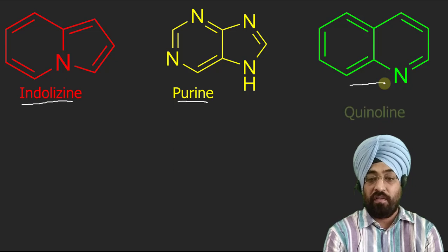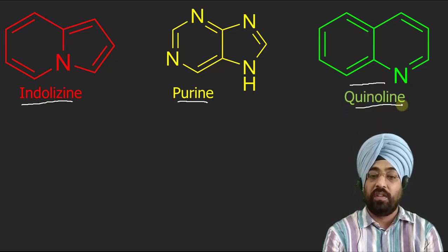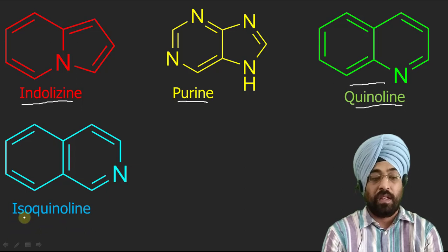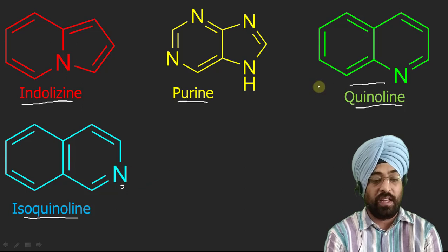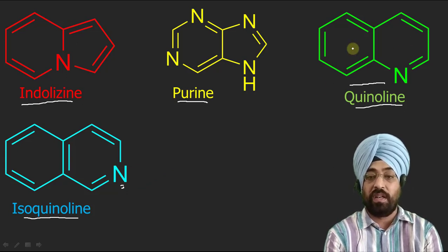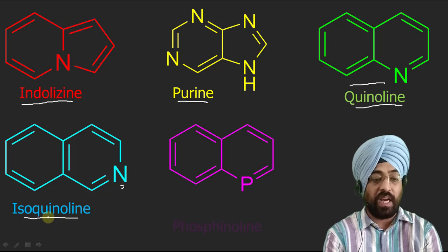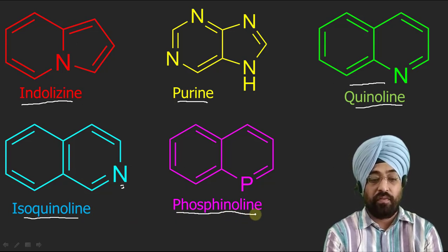Now this compound, which you are familiar with from your graduation classes, is called quinoline. This is the second isomer; it is called isoquinoline — it varies by the position of nitrogen. In this compound a six-membered heterocycle is fused with a benzene ring, giving quinoline and isoquinoline. You can guess the name of the next compound — it will be phosphenoline, just to indicate phosphorus. It is phosphenoline.